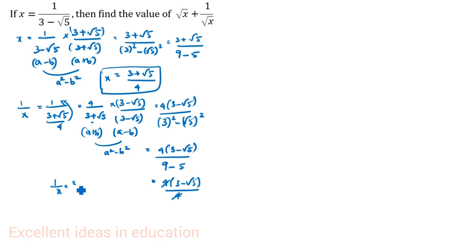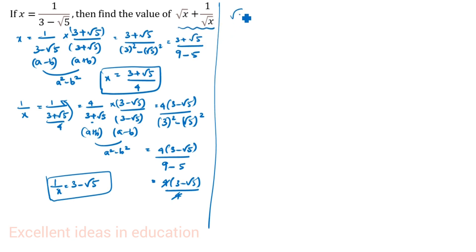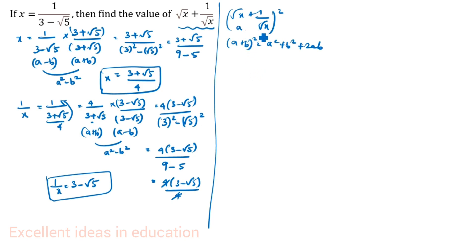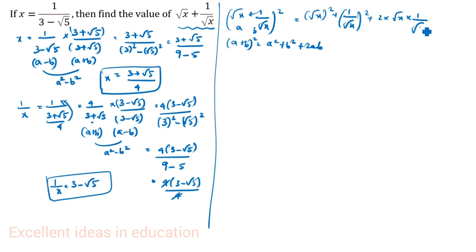So 1 by x is equal to 3 minus root 5. Now we will find root x plus 1 by root x whole square. Using the a plus b whole square formula: a squared plus b squared plus 2ab, where a is root x and b is 1 by root x. So a squared is x, b squared is 1 by x, and 2ab is 2 times root x times 1 by root x, where root x cancels, giving plus 2.